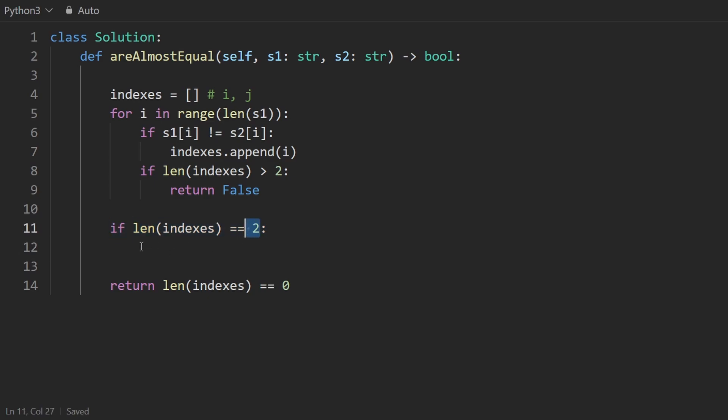We know that this is of length two so I'm going to unpack the two indexes i and j from this array. Python makes it pretty easy for us to do that just like this and then I want to kind of do like an if statement again. I want to say okay string one at index i is equal to string two at index j and vice versa s1 at j, s2 at i. If that's the case I want to return true otherwise I want to return false.